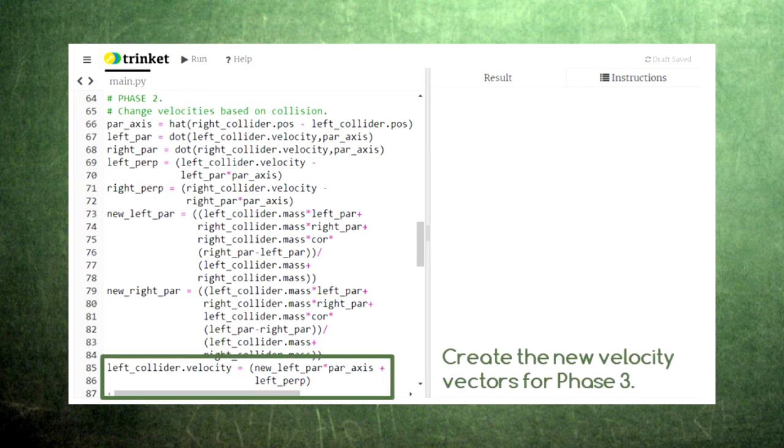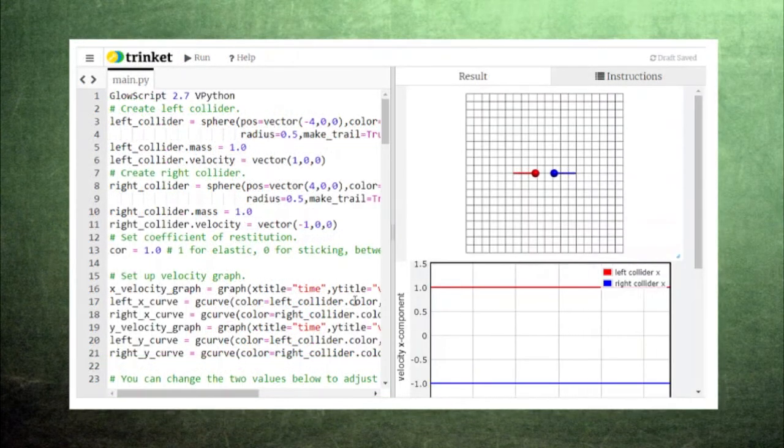Finally, we assemble the velocity vectors using the original perpendicular pieces and the new parallel pieces. First, let's check to make sure that these changes produce the same results we've seen before. We'll give the two colliders the same mass and opposite velocities.